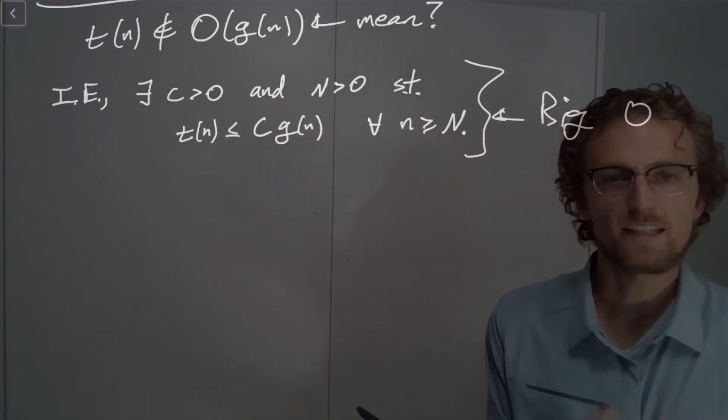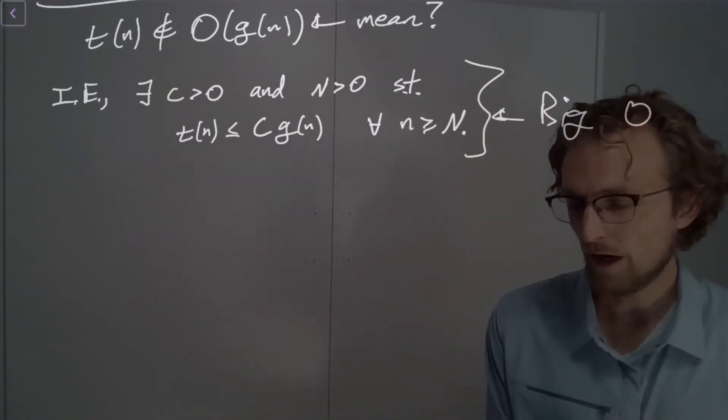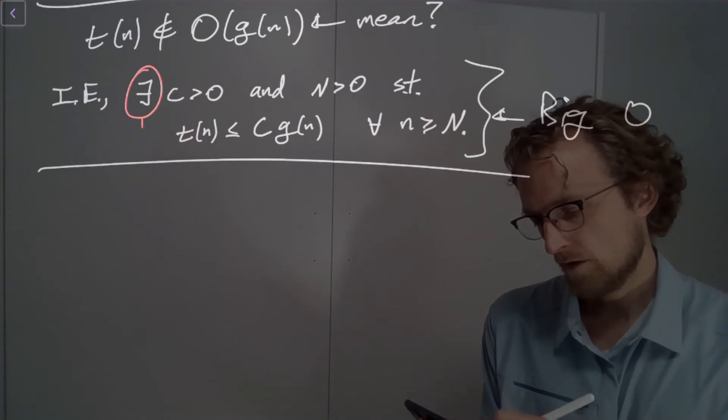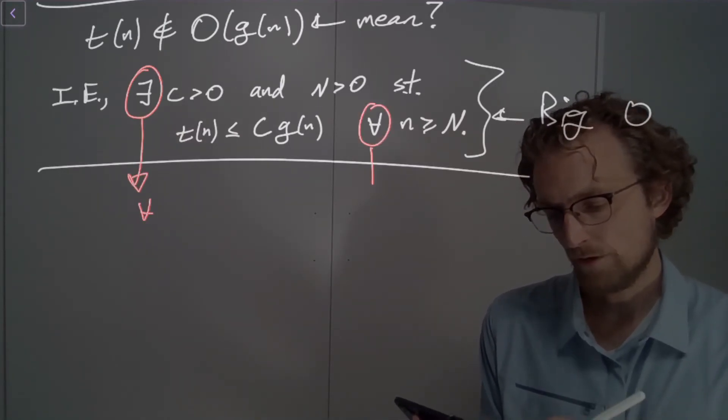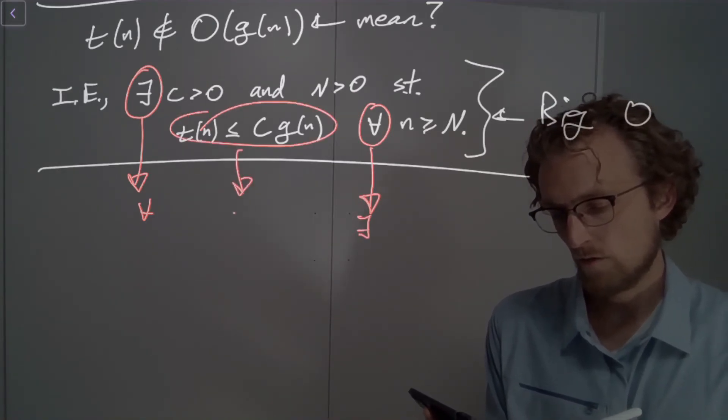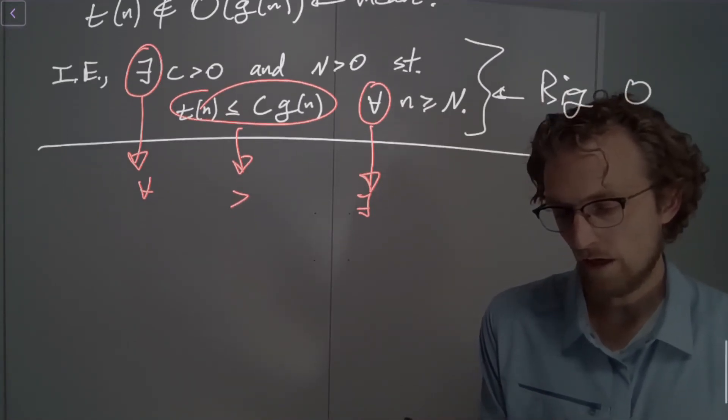All right. So here's the definition of big O. So what we want to do is practice negating this statement. So what is the negative of this statement? If I wanted to just not the whole thing, how would I write that out? Well, the there exists turns into a for all. The for all turns into a there exists. And then this turns into a strictly greater than.